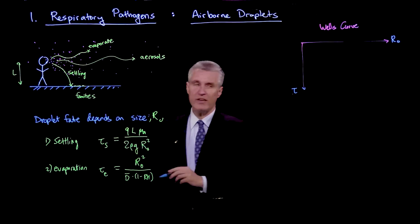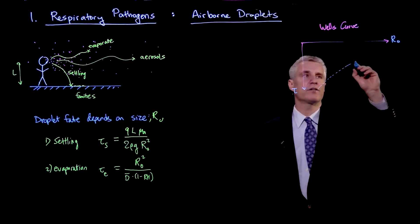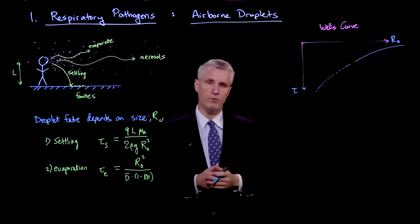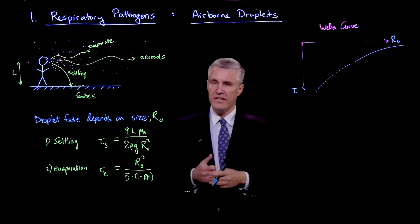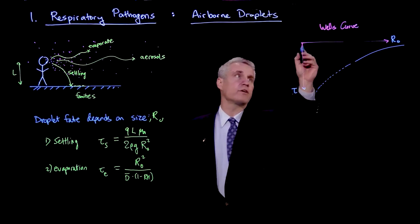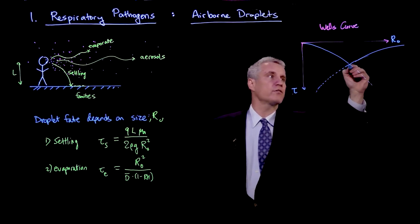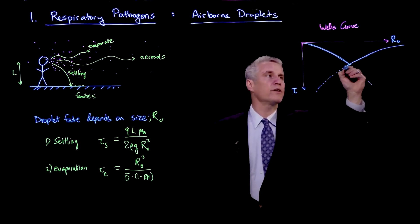So the settling is something like this, where it's a function that goes to zero like 1 over R squared. On the other hand, evaporation is the fastest for the smallest droplets. You see that it goes like R0 squared, so it has a dependence more like this. And so basically these curves kind of intersect at a certain point here.